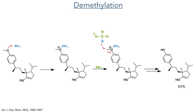In the next step, the ether was demethylated using boron tribromide. This first coordinates to the oxygen and then reacts with another equivalent of boron tribromide, forming boron tetrabromide which is more nucleophilic and able to attack the methyl group, eliminating the phenolate which is protonated upon workup.